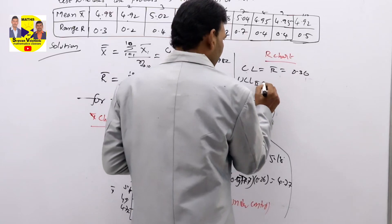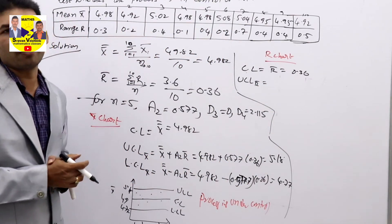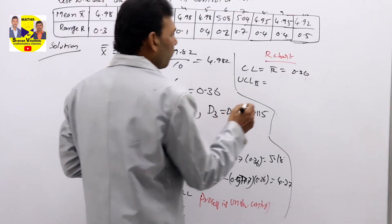UCL R bar—because standards are not given, sigma is not given—we are going to take table values. So here the table values are: UCL is D4 R bar.